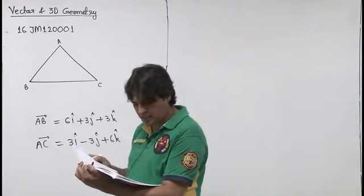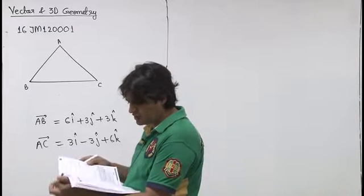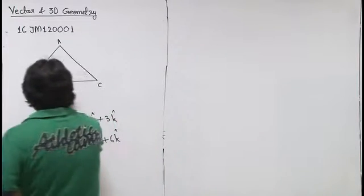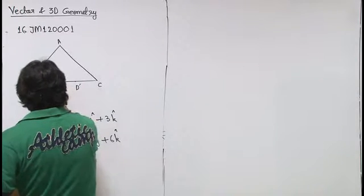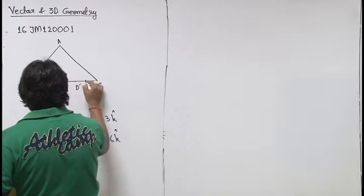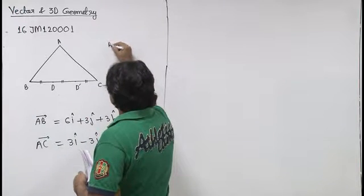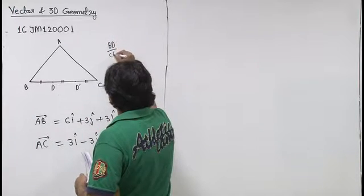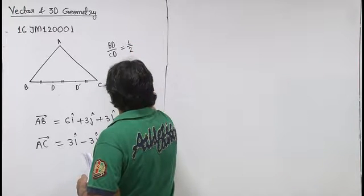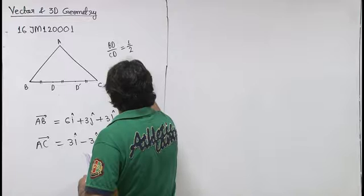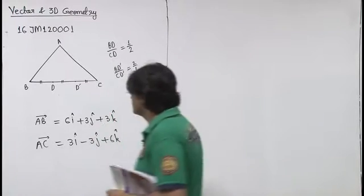D and D dash are the points of trisection of side BC. Point of trisection means three equal parts divided by D and D dash, so BD upon CD is 1 to 2, and B D dash upon CD dash is 2 to 1.